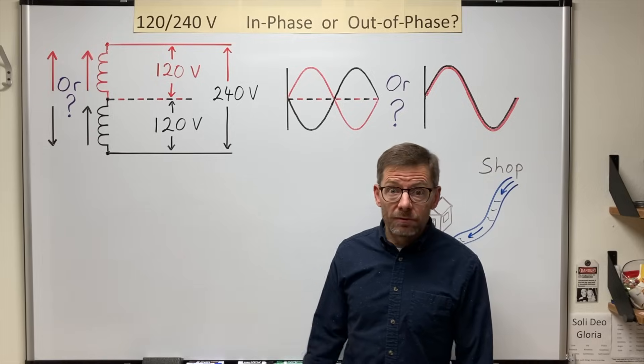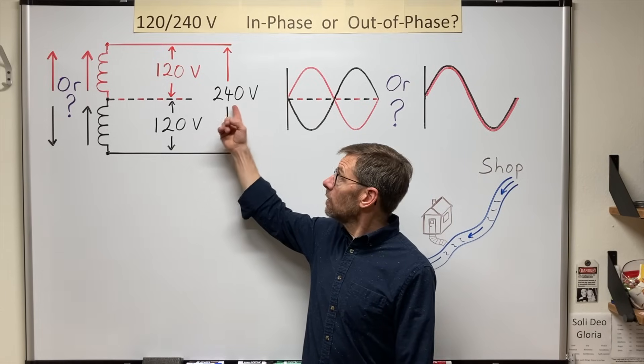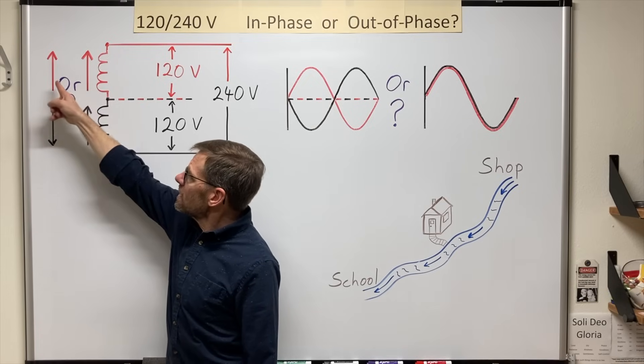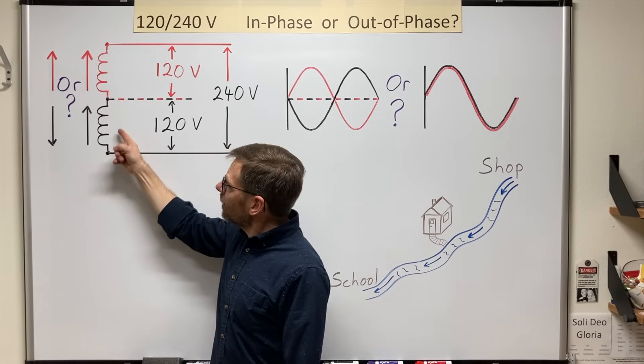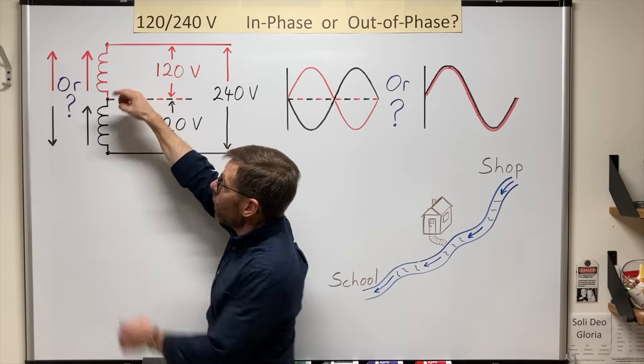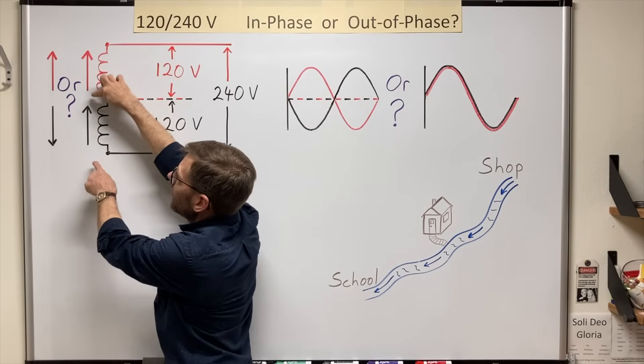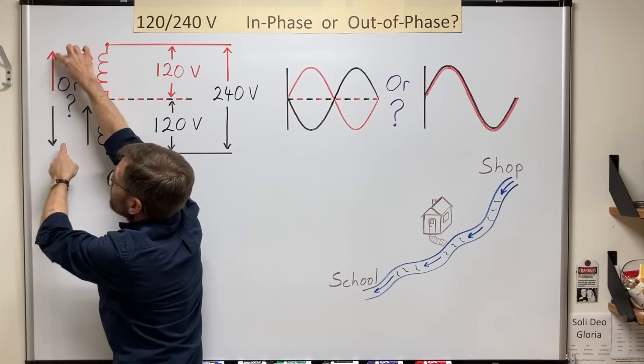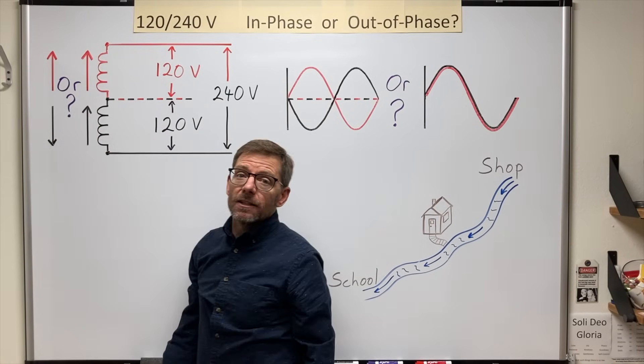Today I'm looking at a common confusion in 120/240 volt systems. We'll consider which of these is correct. Are these two windings, or two halves of the winding, in phase with each other, or are they out of phase by 180 degrees?